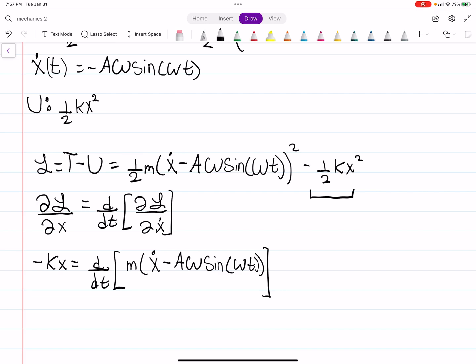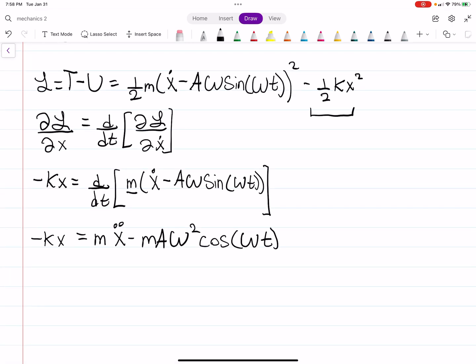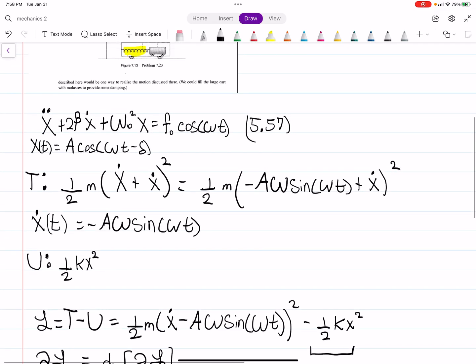We're going to want to take a time derivative of this. So minus KX equals M X double dot minus, the derivative of, we have our constants out here. The derivative of sine omega T will be omega squared, cosine omega T. And also, we have to distribute the M. That M needs to be distributed. Now that we have this, we can rewrite. We can see this is very similar to equation 5.57.